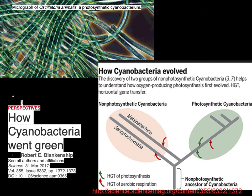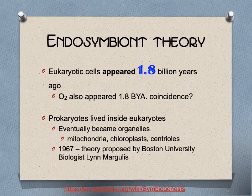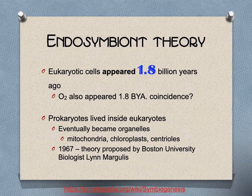More about where cyanobacteria evolved: here are stromatolites from what looks like Highborne Cay in the Bahamas, and some from western Australia. There are stromatolites in small pockets around the Earth.